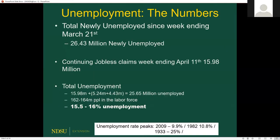Total newly unemployed since March 21st is 26.43 million new filings. Continuing jobless claims for the week ending April 11th are about 16 million, so total unemployment remains around 15.5 to 16%. That is higher than the Great Recession peak of 9.9% and higher than the early 1980s double dip peak of about 11%. Some of these jobs are simply not coming back, and I don't think we return to 3.5% unemployment anytime soon.